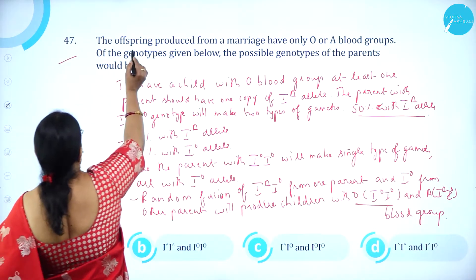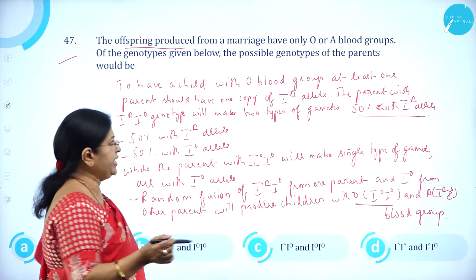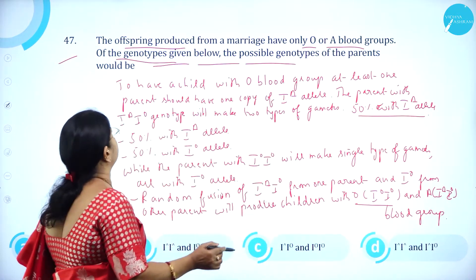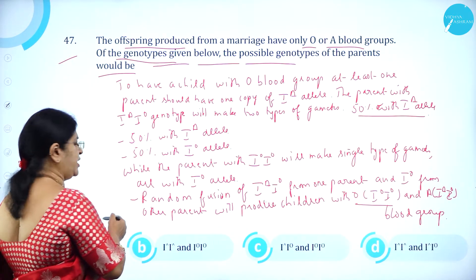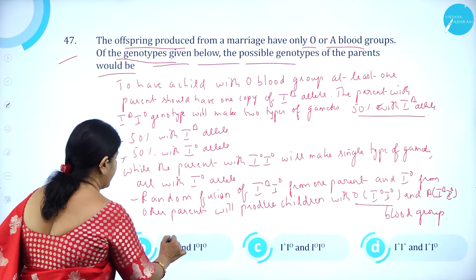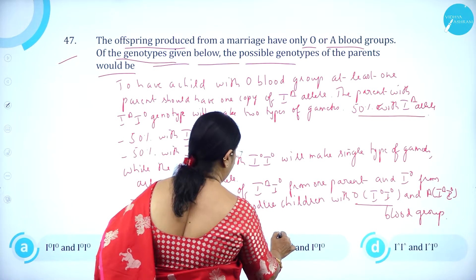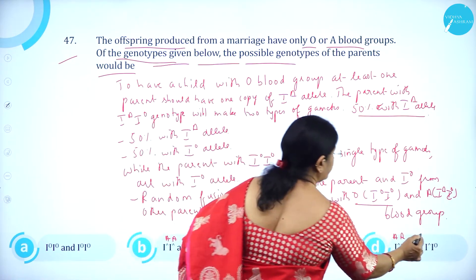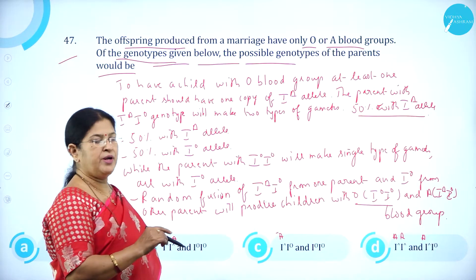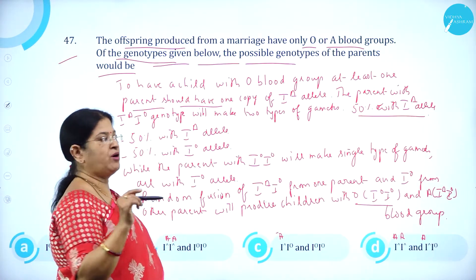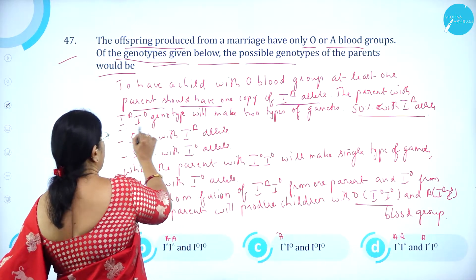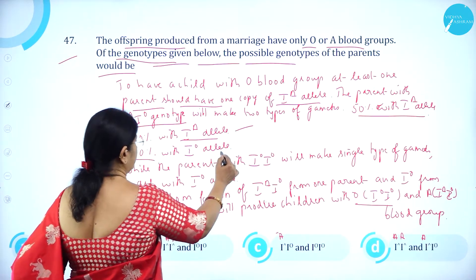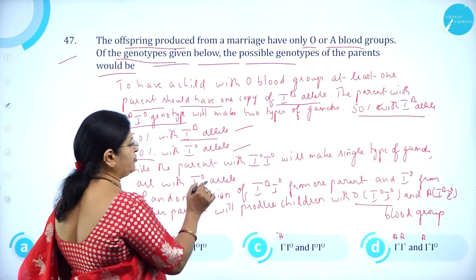Moving on to question number 47. The offspring produced from a marriage have only O or A blood groups. The possible genotypes of the parents would be among the given options.